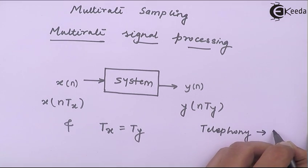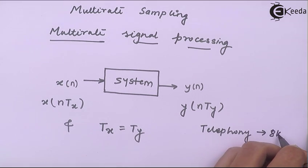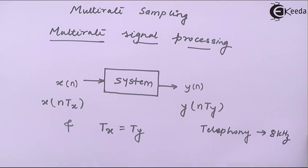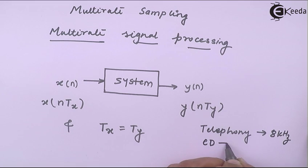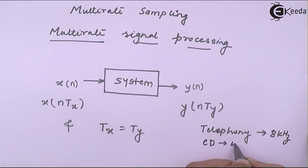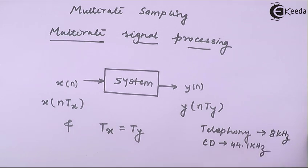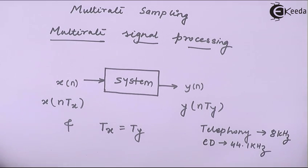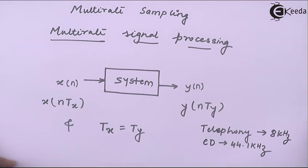For example, telephony works with 8 kilohertz of sampling rate, and CD audio works with 44.1 kilohertz of sampling rate. So these various different sampling rates are required in telecommunication applications.